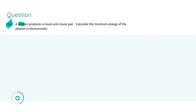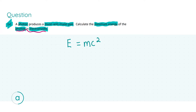In part five we are told that a photon produces a muon and an antimuon pair. We need to calculate the minimum energy of the photon in electron volts — the last part is extremely important because we will originally calculate our answer in joules and then convert to electron volts. Since we are looking at the conversion of a photon's energy into matter, we use E = mc², which yields your first three marks.